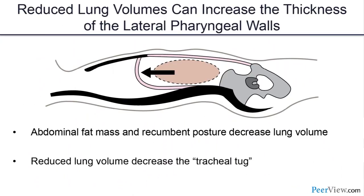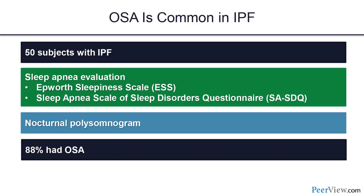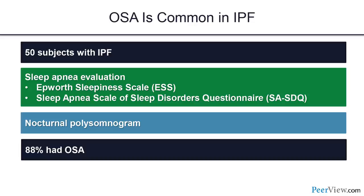The physiology linking IPF with obstructive sleep apnea: animal models show that reduced lung volumes cause upper airway laxity or easy closure — the same mechanism as obesity. We studied 50 IPF patients with questionnaires and nocturnal polysomnograms and found 88 percent had obstructive sleep apnea, echoed in other studies. One of my fellows, Olivia Giddings, asked whether CPAP compliance affected survival.